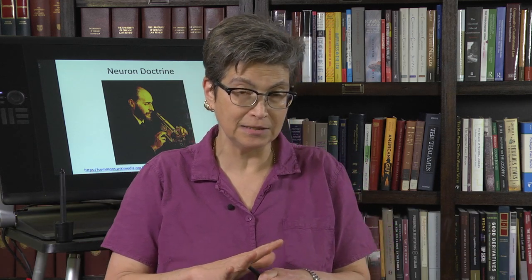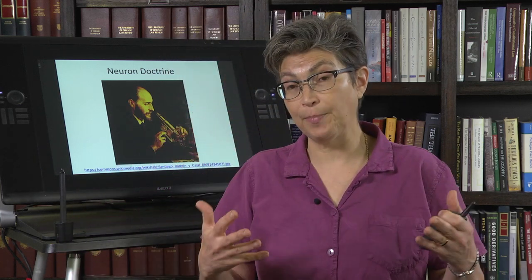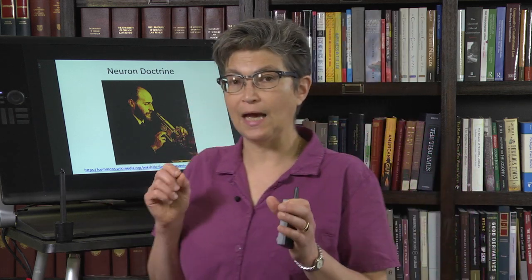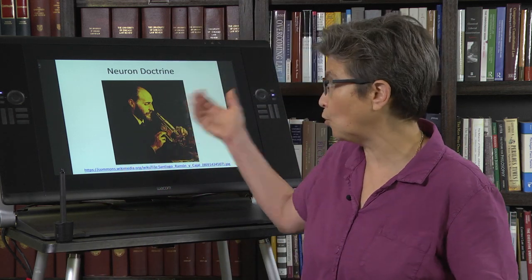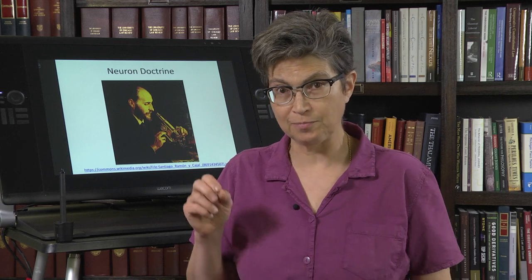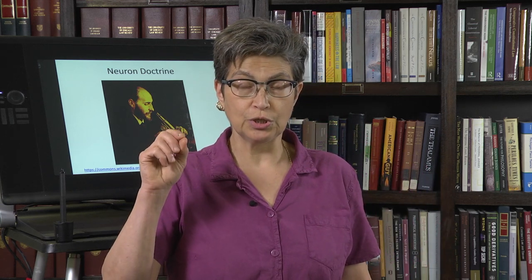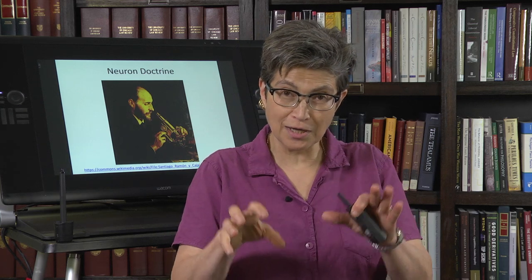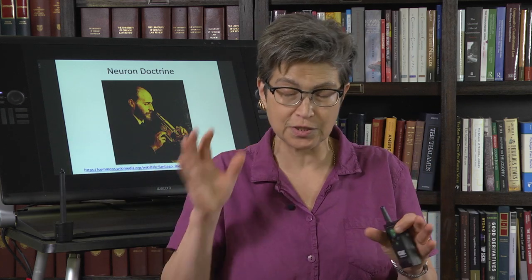When you look at the nervous system, you see this mass. In the late 1800s there was an idea that while the rest of the body was composed of cells — known since the late 1700s — the nervous system was actually a syncytium, with no distinct cells. The person who upended that incorrect idea was Ramón y Cajal, who used a technique invented by Camillo Golgi.